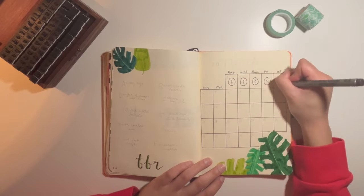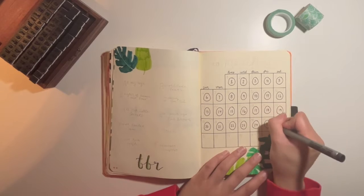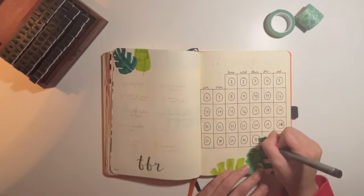So this month what I did is I did these little circles inside of the squares for each day and then put the date. And so each day that I read I will just fill in the circle.